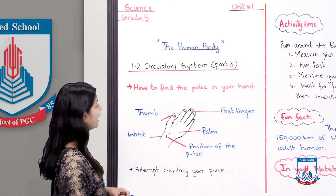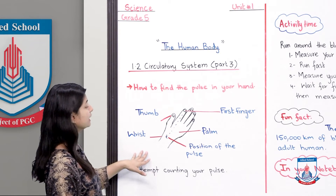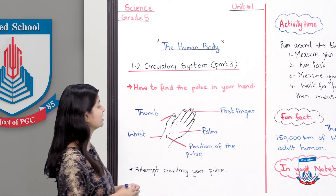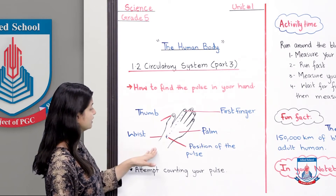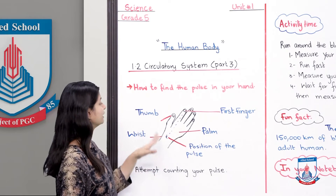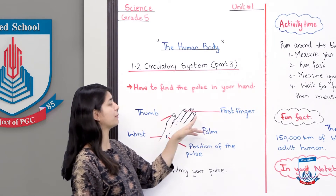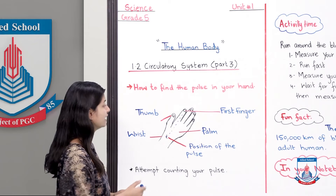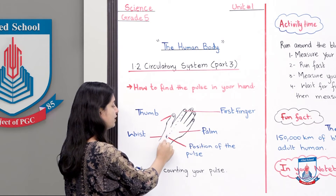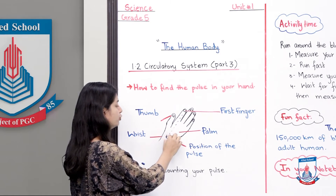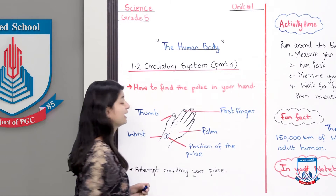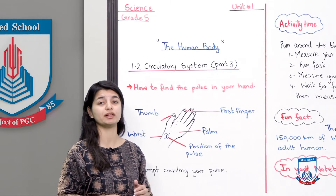How to find the pulse in your hand? Basically, if this is your hand, which I will demonstrate to you — your wrist is called your wrist, and your thumb is your first finger. It happens that if you go down from the first finger, you have a point on your wrist, and that point is where you can check your pulse.